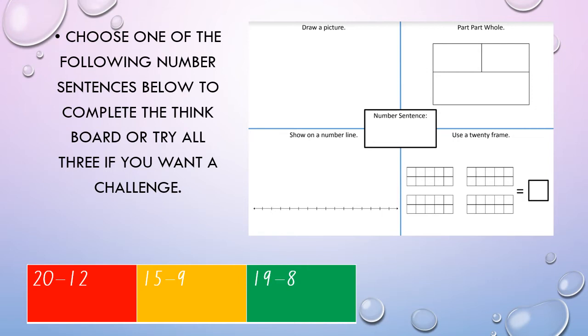Next we're going to choose one of the following number sentences below to complete the think board, or try all three if you want to have a bit of a challenge. We've got draw a picture, so you can draw a picture of your number sentence over here. You might rewrite the number sentence but using pictures. So 20 dogs and 12 cats, I don't know, whatever you want to do. You can draw your number sentence there.